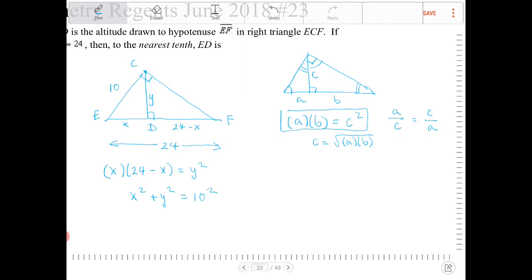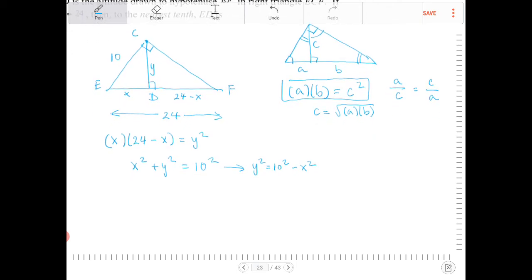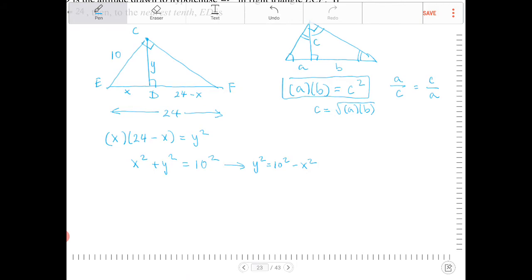And by doing this, I can then isolate Y squared in the second equation here. And what I can do then is take that equation that I've isolated Y squared for and substitute it back into the first equation. So take this and put it back in. And the result of that will be X times 24 minus X is equal to 10 squared minus X squared.